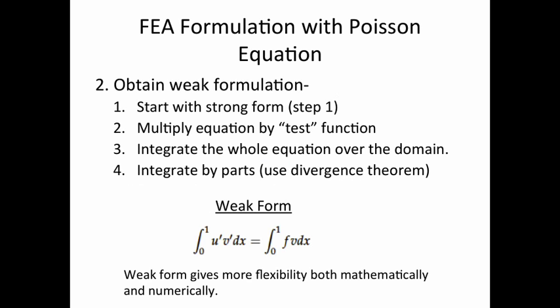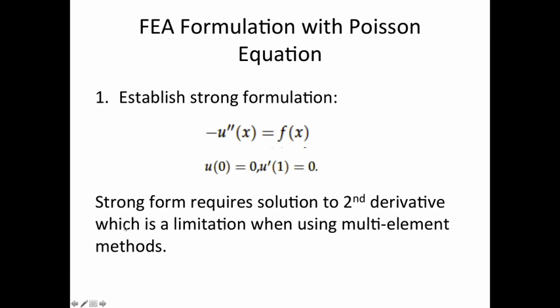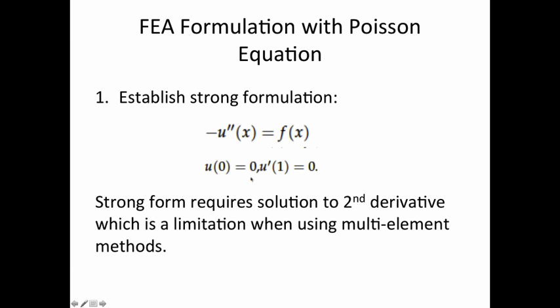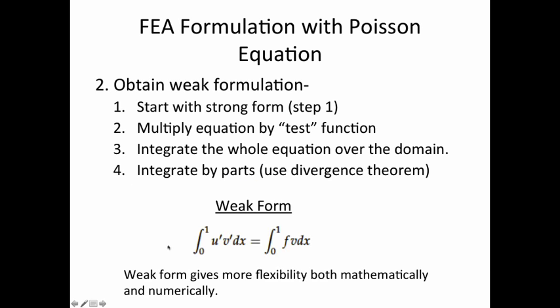To obtain the weak form - step two - you start with the strong form, multiply the equation by a test function v, and then integrate the whole equation over the domain. Then you integrate by parts using the divergence theorem. The resulting equation is the weak form of the Poisson equation, with the domain from zero to one. The weak form gives more flexibility, both mathematically and numerically, which is why we want it in that form.